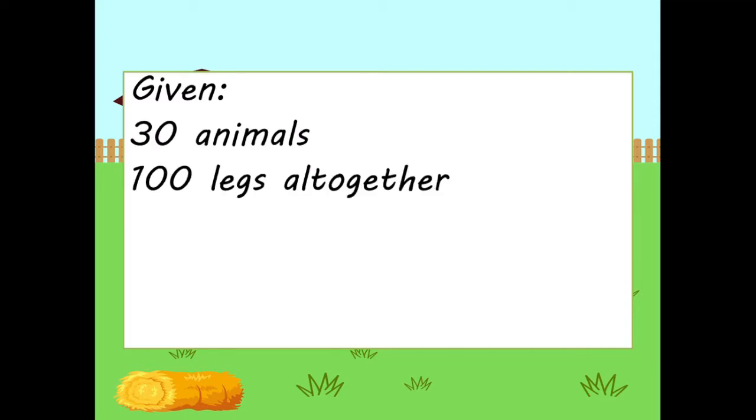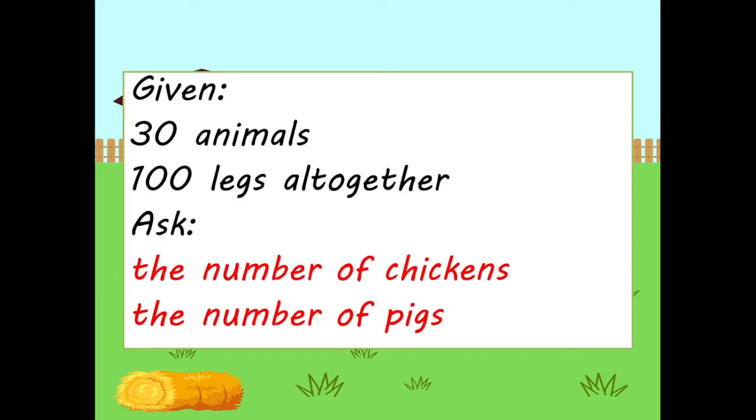So the given is there are 30 animals and there are 100 legs altogether, and we are asked to find the number of chickens and the number of pigs.